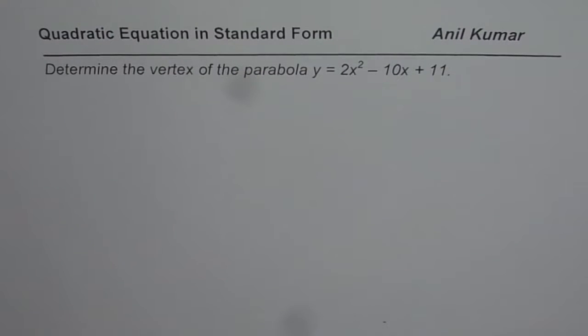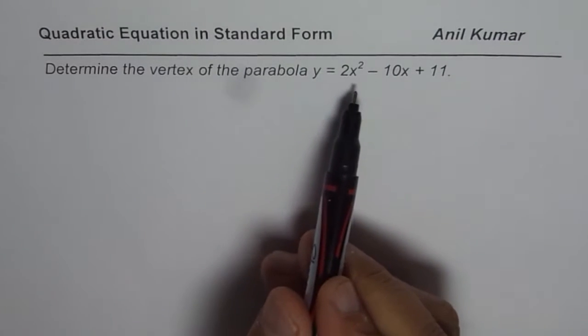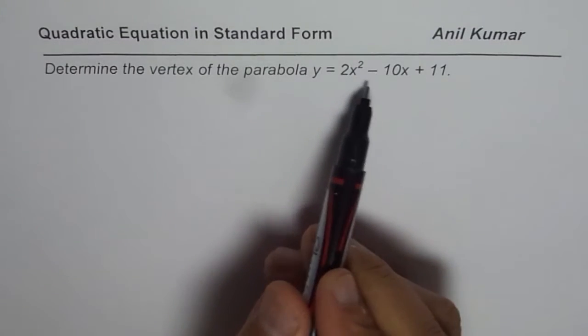I am Anil Kumar and in this series we are trying to understand quadratic equation in standard form. The equation here is determine the vertex of the parabola y equals 2x squared minus 10x plus 11. Now to find the vertex from standard form we can adopt two methods.